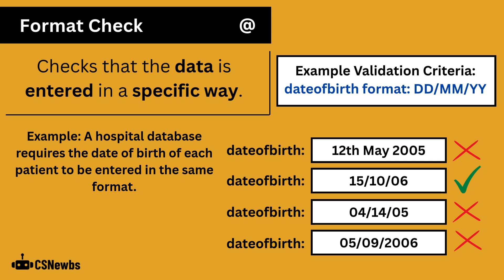So the first example is not accepted. The second example is. You might think that the third example should be accepted, but the two middle values represent the month, and there is no 14th month. And finally, the last value is not accepted because they've used four digits for the year when only two are accepted.